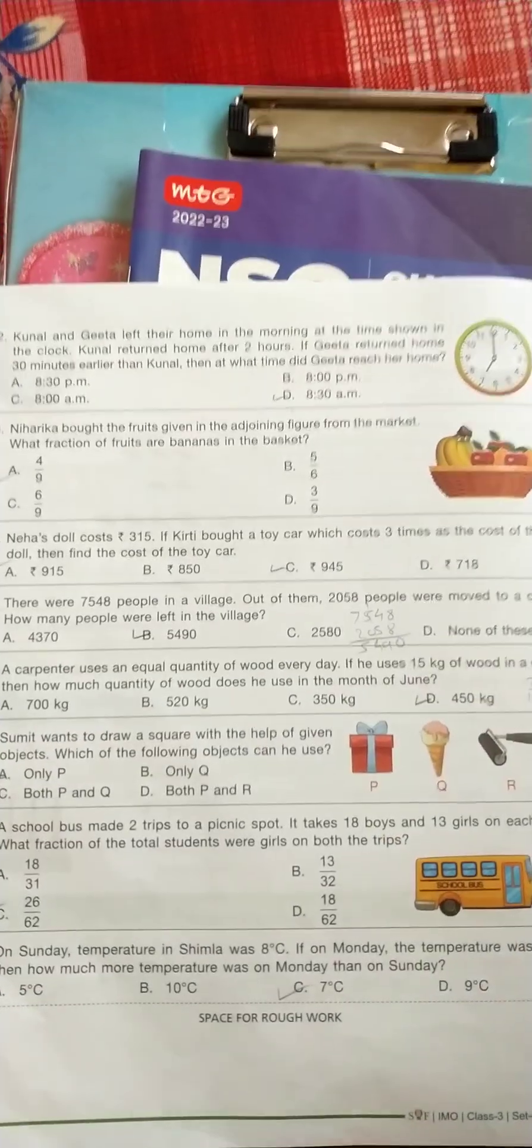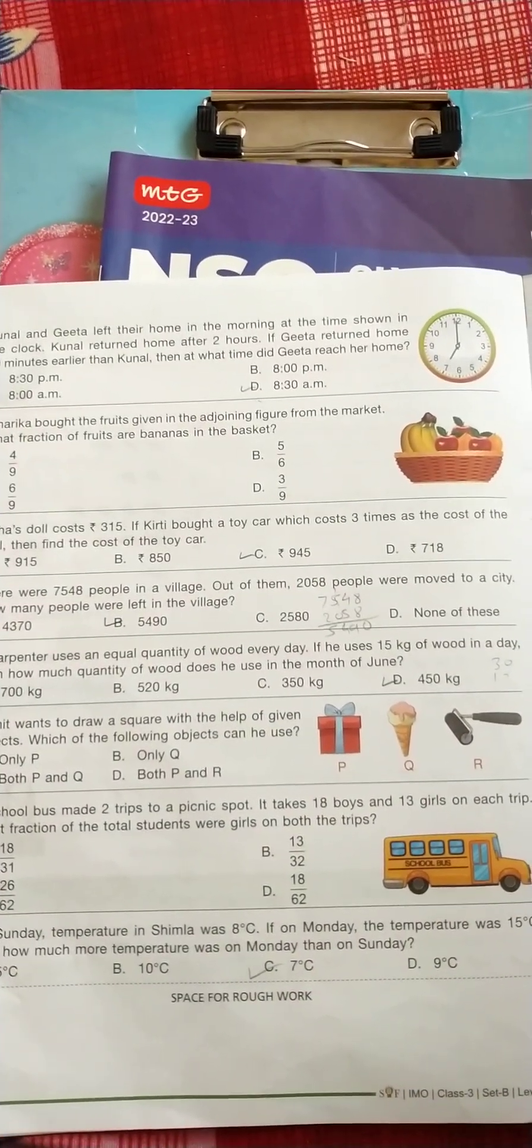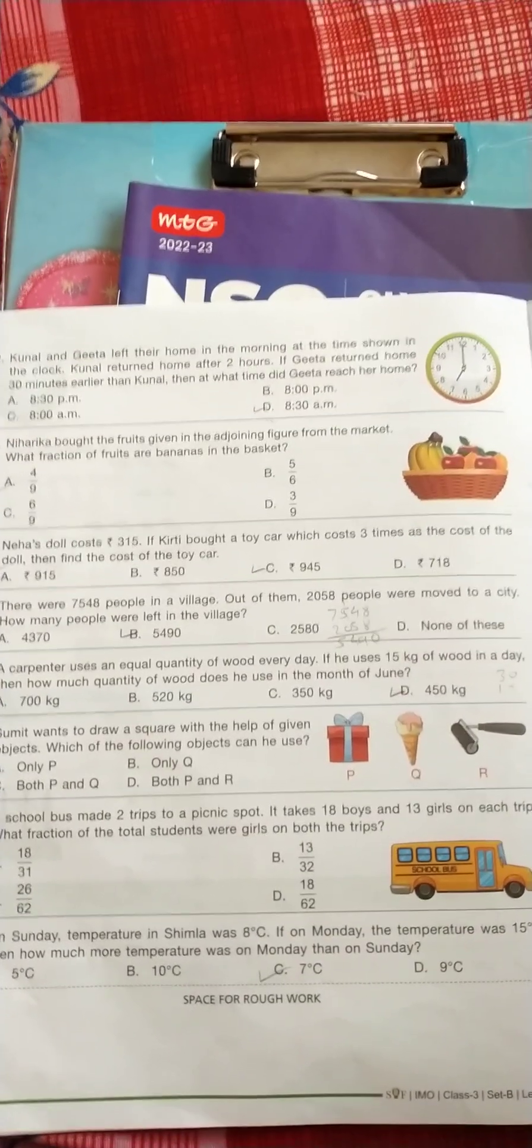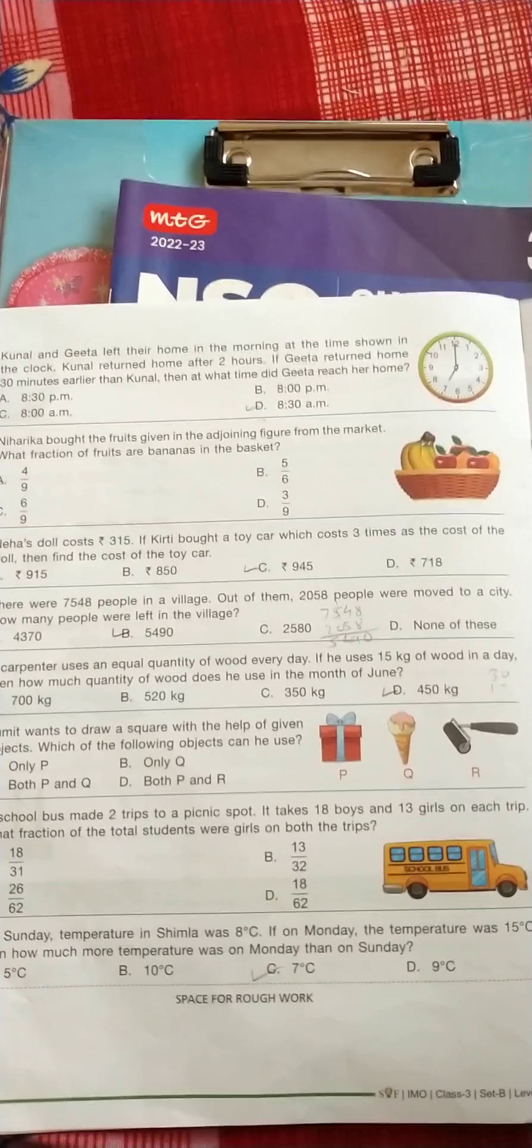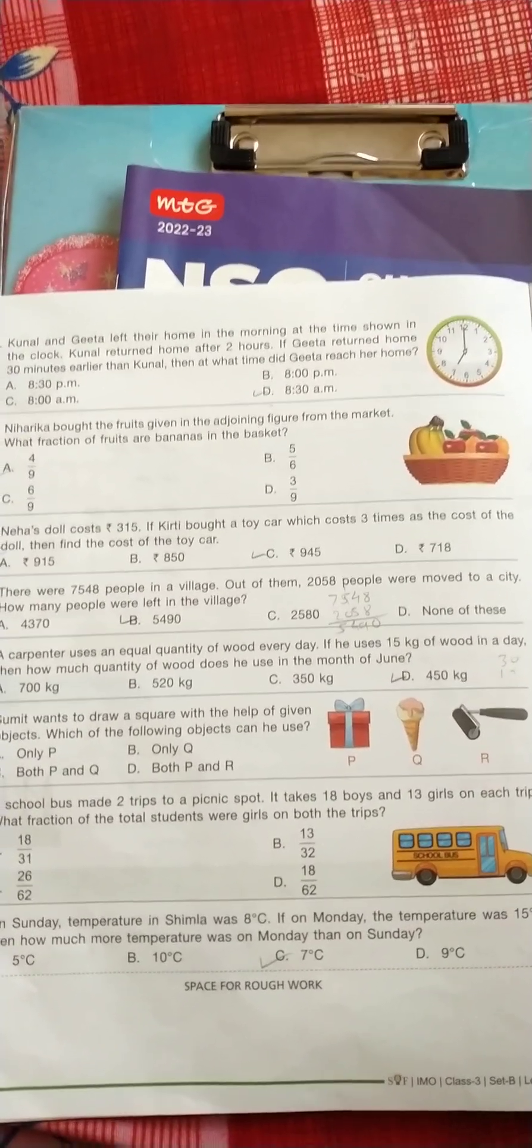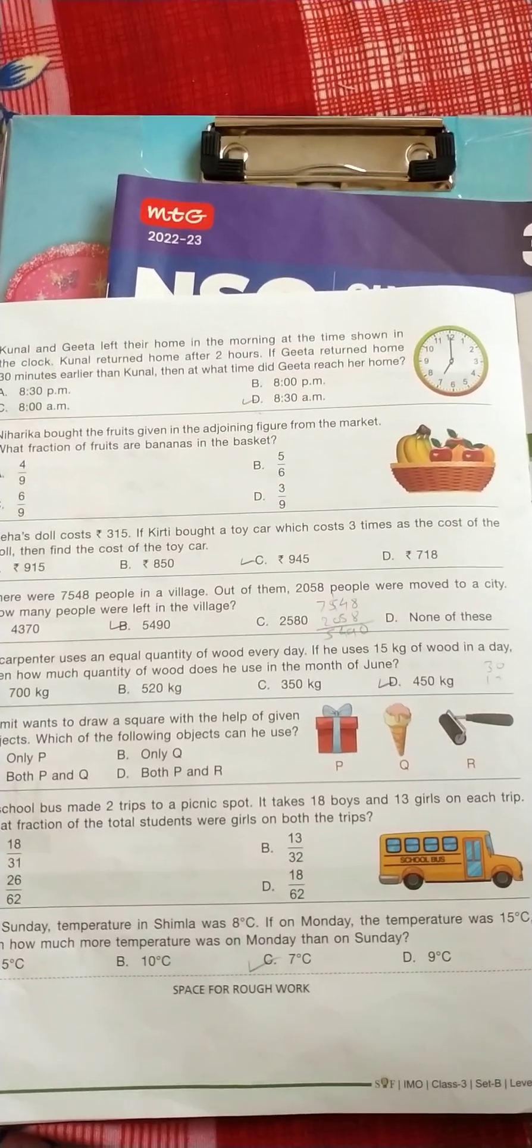Question number 22: Kunal and Geeta left their home in the morning at the time shown in clock. Kunal returned home after 2 hours. If Geeta returned home 30 minutes earlier than Kunal, then at what time did Geeta reach home?